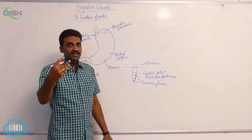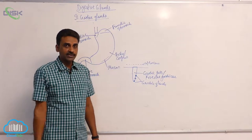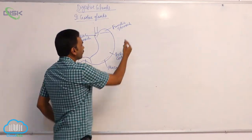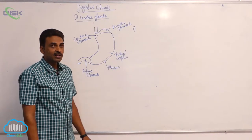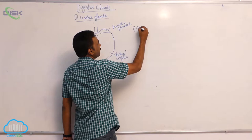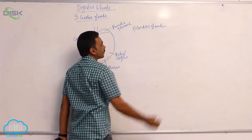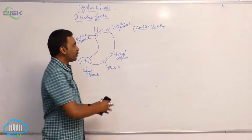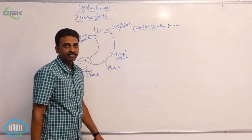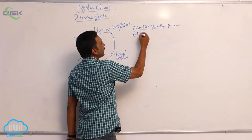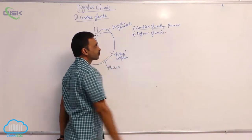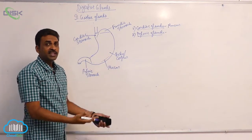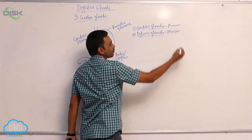Gastric glands are found in the mucus layer, out of the four layers of the stomach wall. Based on location, gastric glands are three types. The first are cardiac glands, present inside the cardiac stomach. They produce mucus. The second type are pyloric glands, present in the pyloric stomach.